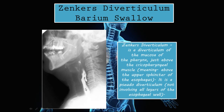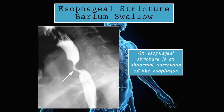On the barium swallow test you can see that the smooth, hollow pipe is not very smooth at all, because it has this pouch that has developed — a hypopharyngeal pouch called Zenker's diverticulum. This is what a Zenker's diverticulum typically looks like on a barium swallow test.